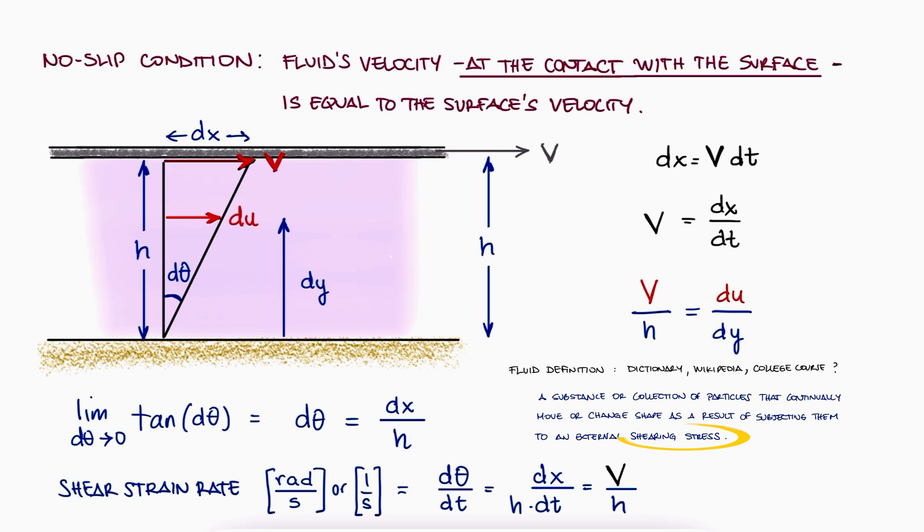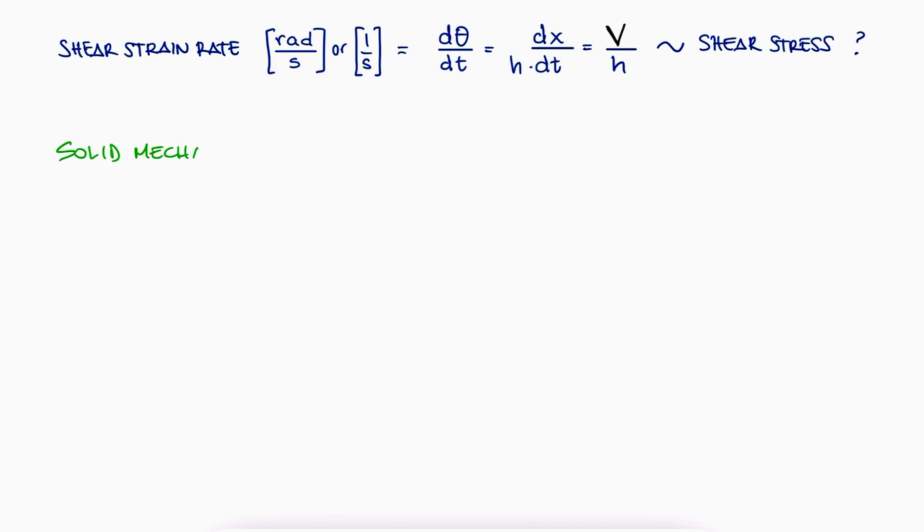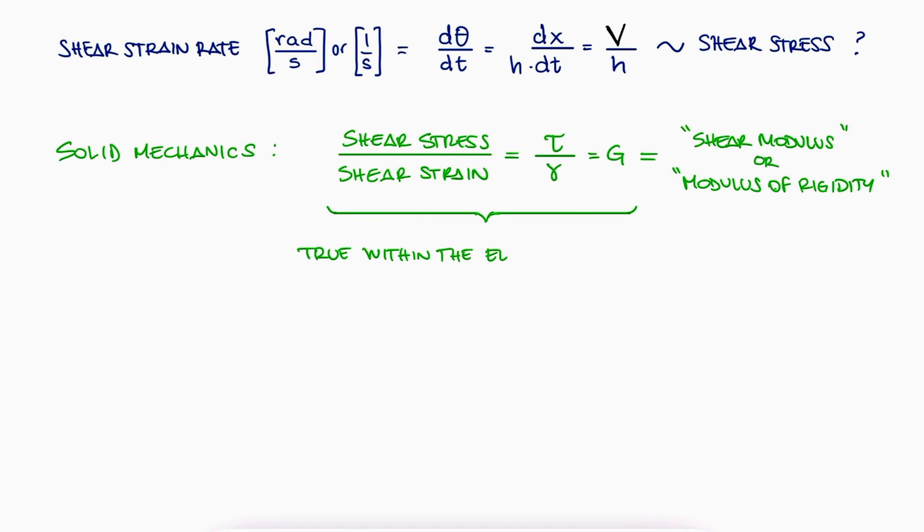The connection between the shear stress and the shear strain rate is very similar to the relationship between shear stress and strain in solid mechanics. In that case, we defined that shear stress over shear strain is the property of the material called shear modulus or modulus of rigidity g. This linear relationship is only true as long as the material is being deformed elastically, not plastically, in the linear portion of a stress-strain diagram.